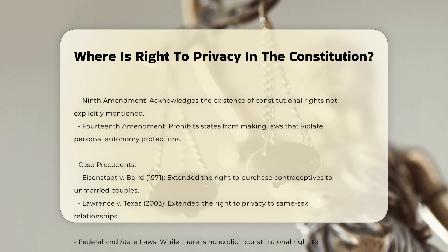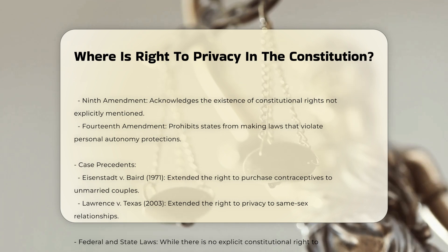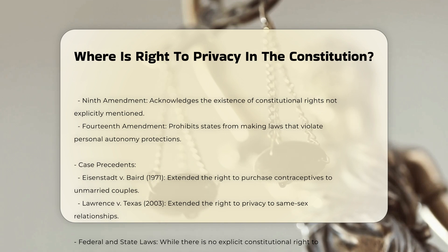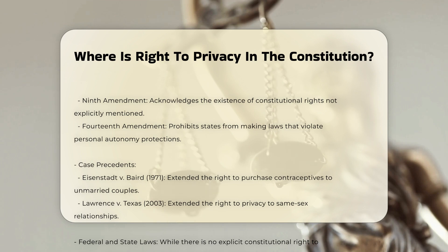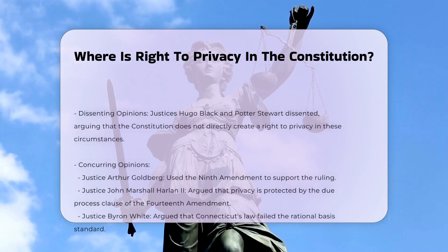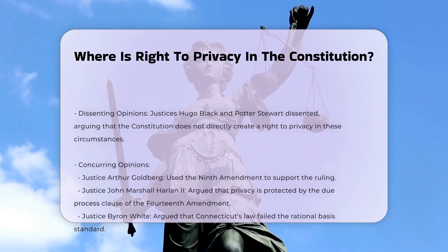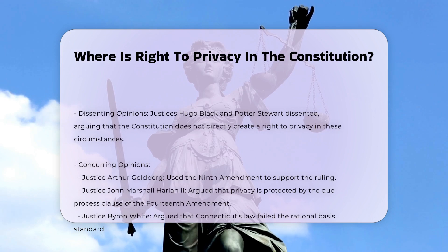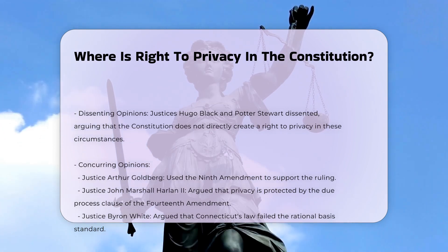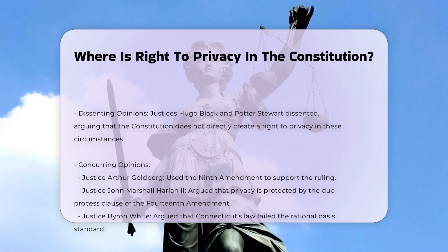Several constitutional amendments are interpreted to imply privacy rights. The First Amendment provides the freedom to choose any religious belief and to keep that choice private. The Third Amendment protects the zone of privacy in the home. The Fourth Amendment protects against unreasonable searches and seizures by law enforcement. The Fifth Amendment provides the right against self-incrimination, which justifies the protection of private information. The Ninth Amendment acknowledges the existence of constitutional rights not explicitly mentioned in the Bill of Rights. The Fourteenth Amendment prohibits states from making laws that violate personal autonomy protections provided for in the first thirteen amendments.